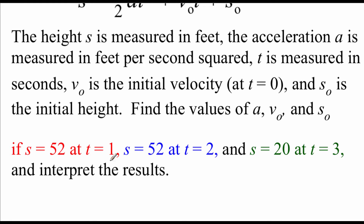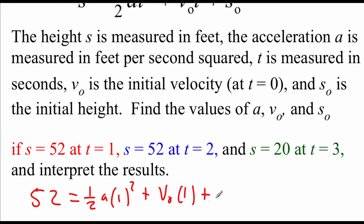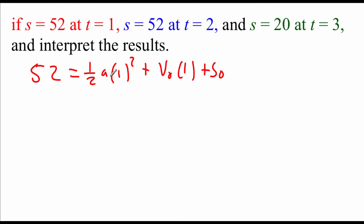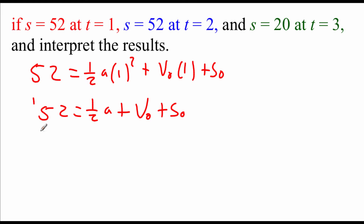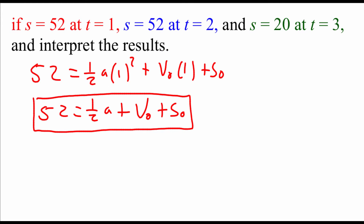First, I'm plugging in the first set of information. So 52 equals one-half a times one squared plus v-sub-0 times one plus s-sub-0. Simplifying: one squared is one, and one times one-half is one-half. So this says 52 equals one-half a plus v-sub-0 plus s-sub-0. This will be our first equation in the system. Looking at the second bit of information, we set it up as 52 equals one-half times a times two squared plus v-sub-0 times two plus s-sub-0.